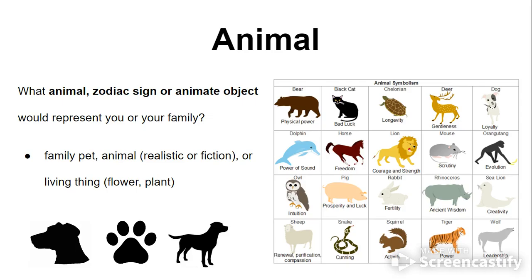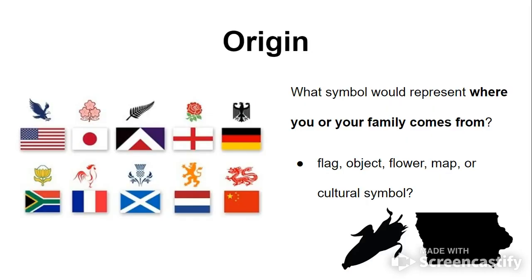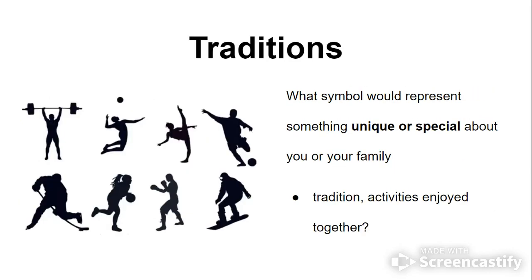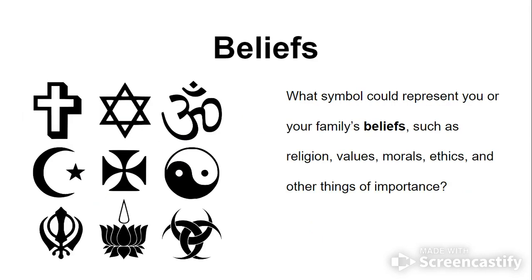You need to pick an animal and draw several symbols of that animal. You need to utilize a family origin and draw several different symbols — whether it's flags, produce, animal, silhouette of the state, or something that represents your heritage. Traditions is something you or your family enjoys doing. For example, my family does a lot of sports and likes competitive play.